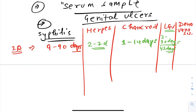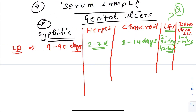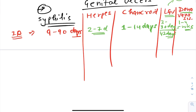Donovanosis incubation period is 1 to 4 weeks, extendable to months — but remember 1 to 4 weeks for exam purposes. LGV is an all-liner question: incubation period is 3 to 30 days, and can extend to 42 days.